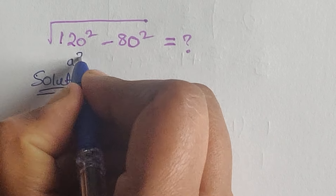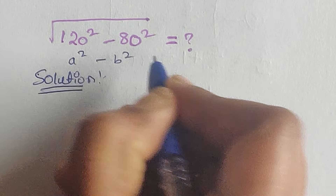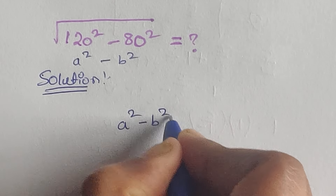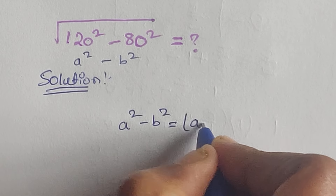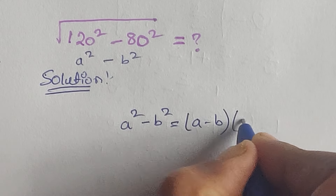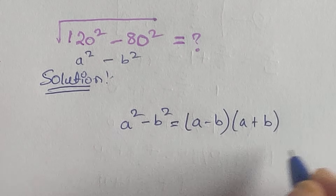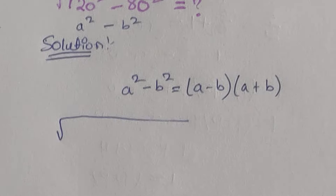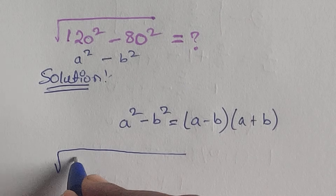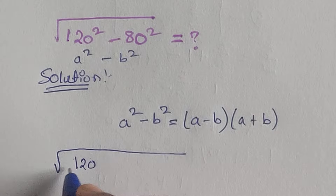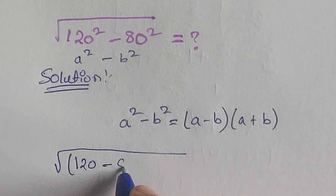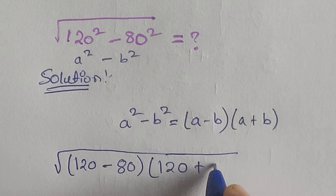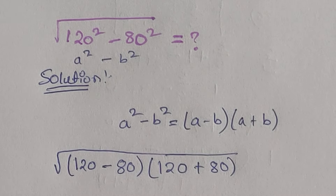This expression is in the form of a squared minus b squared. We know the formula: a² - b² = (a - b)(a + b). Using this formula, we can write the square root of (120 - 80) times (120 + 80), where a is 120 and b is 80.